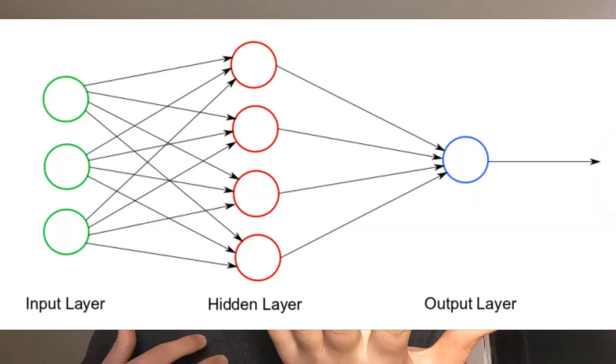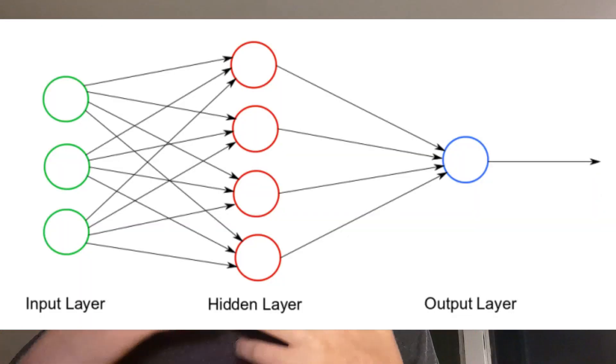Most of the time when we hear the term neural network or artificial intelligence, we hear all of these terms — machine learning, deep learning. Deep learning is a broader family of machine learning that focuses on artificial intelligence with neural networks. So a neural network looks like this, but what does it really mean?